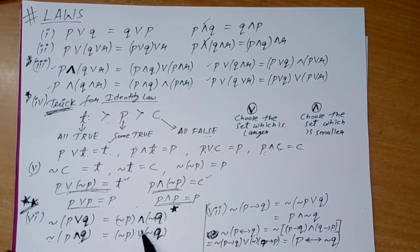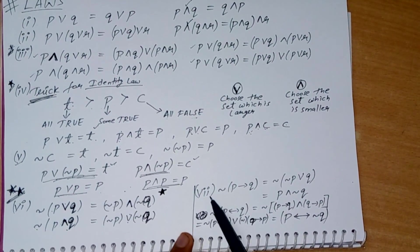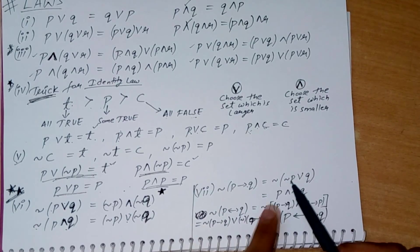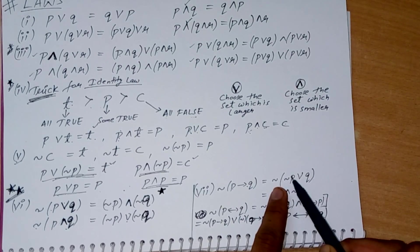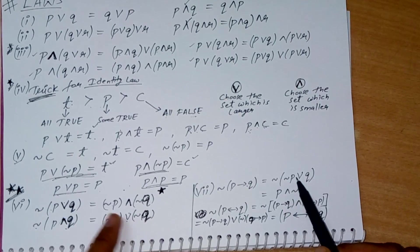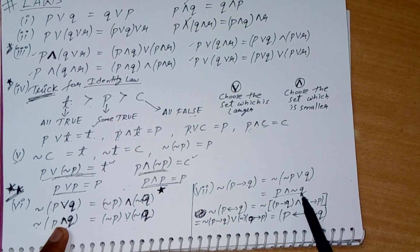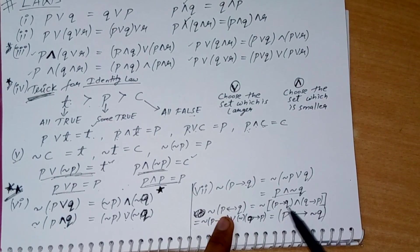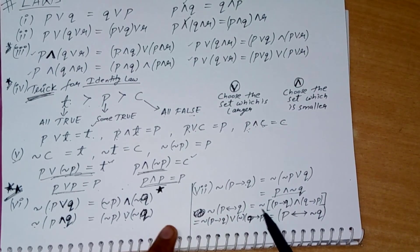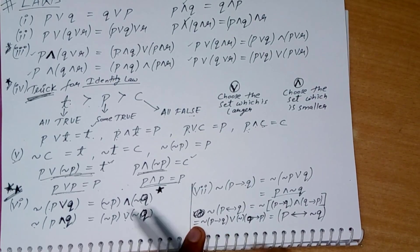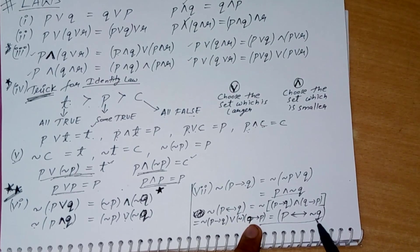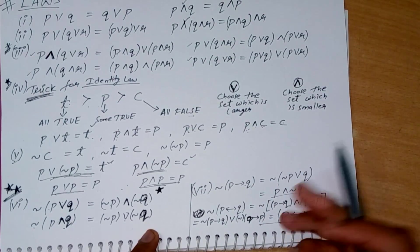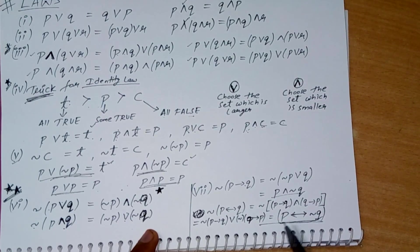An important law: P implies Q is the same as negation of P or Q. Taking the negation of P implies Q uses De Morgan's law and gives P and negation of Q. For P if and only if Q: since P↔Q equals (P→Q) and (Q→P), taking the negation and applying the law gives the corresponding result.